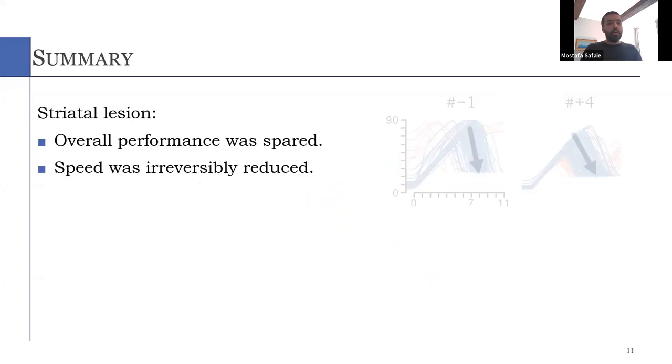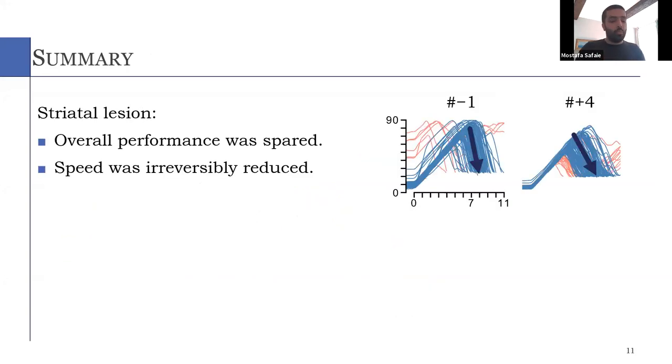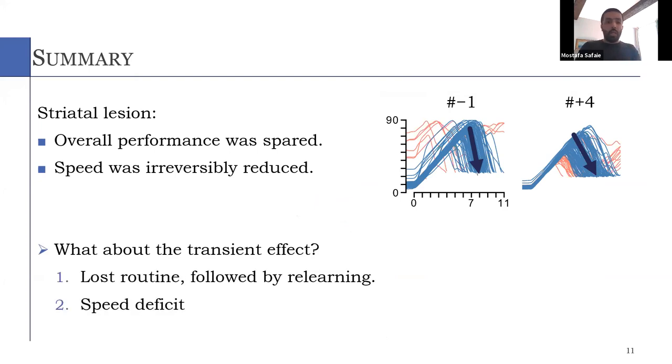So far, I showed you that after striatal lesion, overall performance in the task is spared, however, speed was irreversibly reduced. But there was also a peculiar transient effect in the DS group. So now, one might argue that this could be due to a loss of routine, which is followed by relearning the routine using a striatal independent system. So to test just that, we use a modified version of the task.